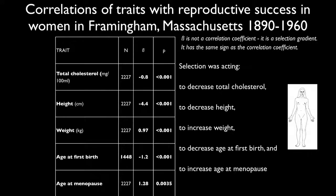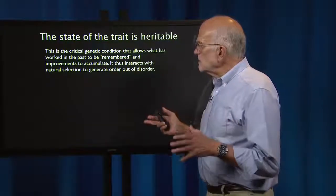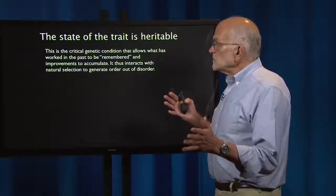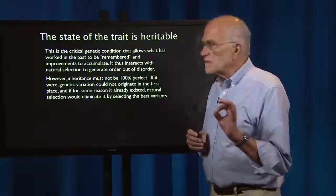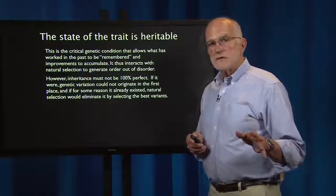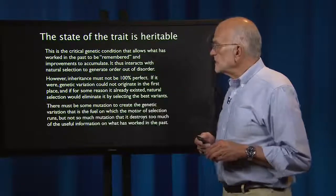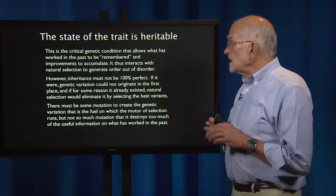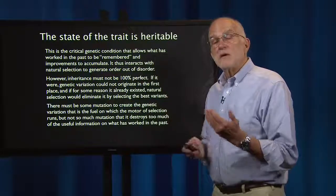The next necessary condition is that the state of the trait must be heritable. That is the critical genetic condition that allows what worked in the past to be remembered and improvements to accumulate. It interacts with natural selection to generate order out of disorder. However, inheritance must not be 100% perfect — if it were, genetic variation could not originate in the first place, and if it already existed, natural selection would rapidly eliminate it by selecting the best variants. There must be some mutation to create the variation that is the fuel on which the motor of selection runs, but not so much mutation that it destroys useful information. So there must be some intermediate, fairly low, optimal mutation rate.